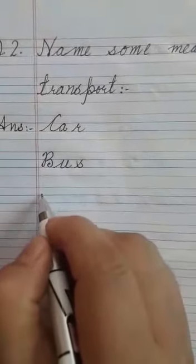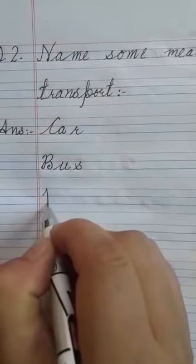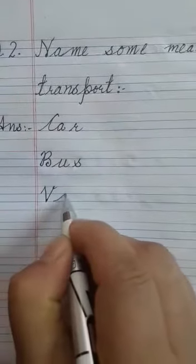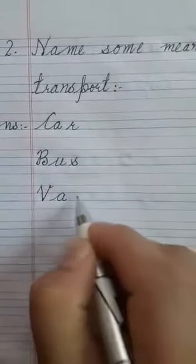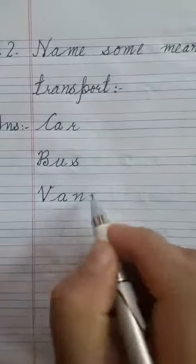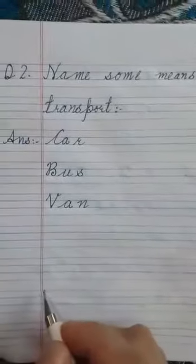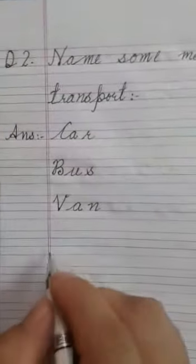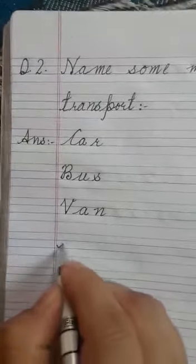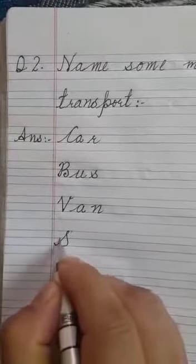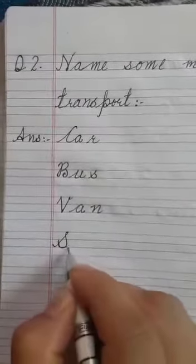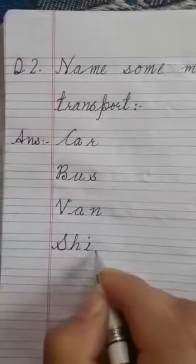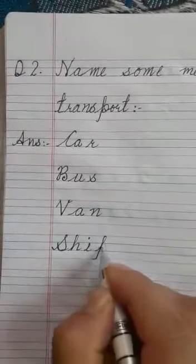Third one we will write: van — capital V, A, N — van. And the fourth one we will write: ship — S, H, I — ship.